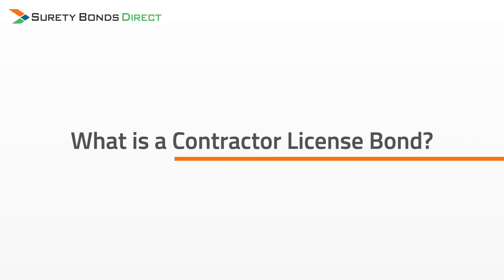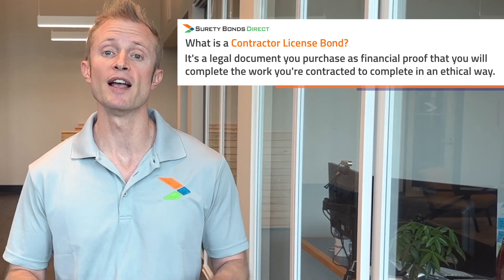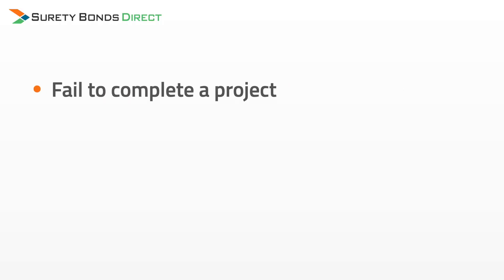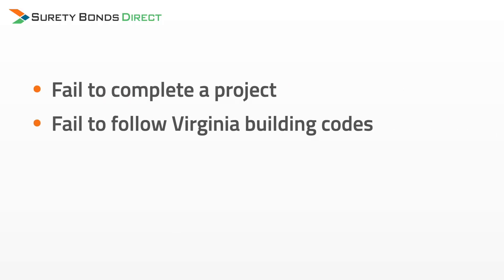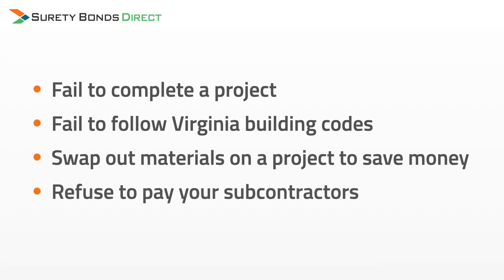A surety bond, or in this case a contractor's license bond, is a legal document that you have to purchase as proof that you are going to complete the work you're contracted to do in an ethical and responsible manner. Think of it like an insurance policy you purchase for your customers and subcontractors. If you purposefully fail to complete a project, fail to follow Virginia building codes, swap out materials to save money, or refuse to pay your subcontractors, your customers or subcontractors can make a claim against your bond, up to the $50,000 bond limit. In short, a contractor license bond protects the public and subcontractors from fraudulent activity committed by the contractor.